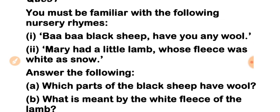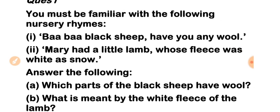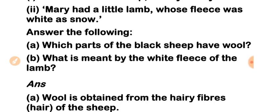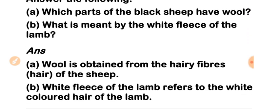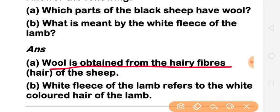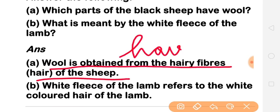The first question is: you must be familiar with the following nursery rhymes — Baa Baa Black Sheep, have you any wool; Mary had a little lamb, etc. Which part of the black sheep has wool? The answer is: wool is obtained from the hairy fibers — the hair of the sheep is our wool.